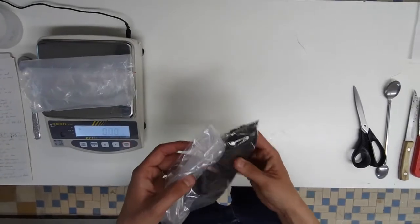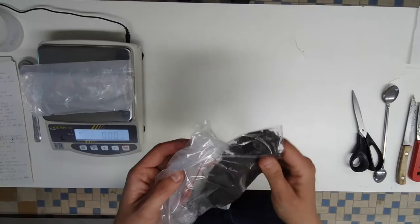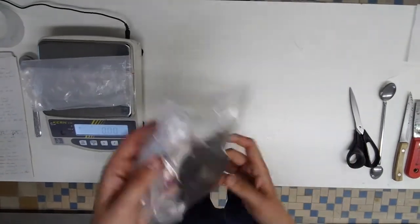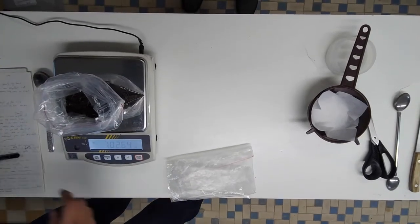First, we homogenize the soil and litter to destroy large aggregates. Do it carefully to not smash the animals inside. Second, we weight the entire sample and write down the result.